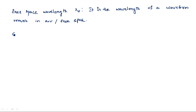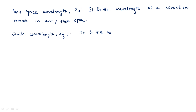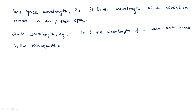The next parameter is guide wavelength, indicated by lambda g. In the first case, for free space, the wave is travelling in the air. But whereas in guide wavelength, the wave travels in the waveguide. So it is the wavelength of a wave that travels in the waveguide — any type of waveguide.